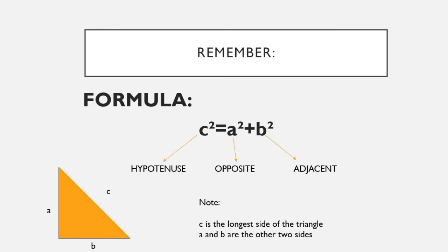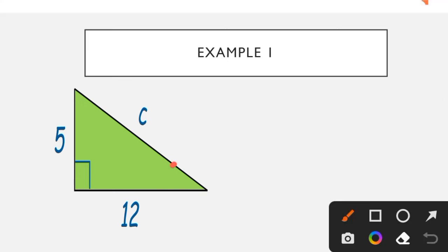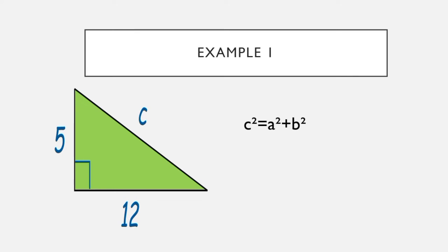Let's proceed to Example 1. In this figure, our opposite is 5 and our adjacent is 12, so our hypotenuse is the missing value. To find this missing value, we use the formula of the Pythagorean Theorem: C squared is equal to A squared plus B squared.